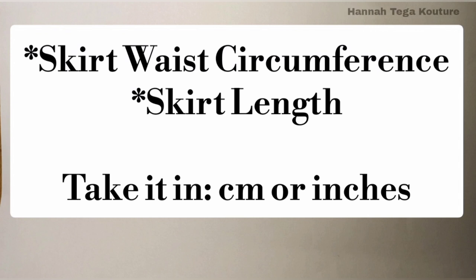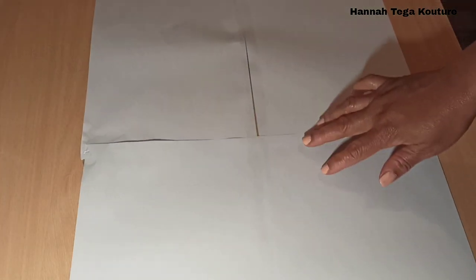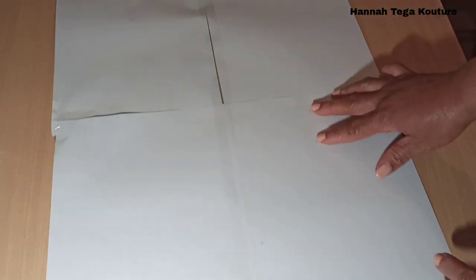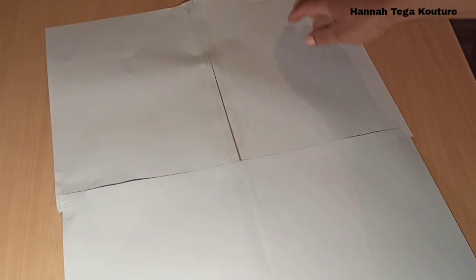In order to make a circle skirt, all you need is your waist circumference and the skirt length. These two things are the main measurements you need to take, and you can take it in centimeters or inches, whatever your preference. I'll be making use of these A4 papers which I've taped together, and I'll be working with centimeters instead of inches, but I'll be mentioning inches in the video.